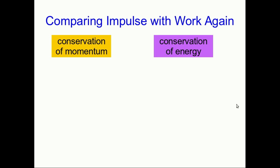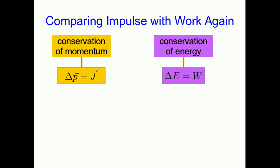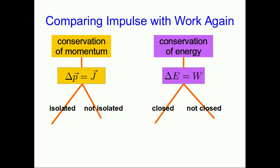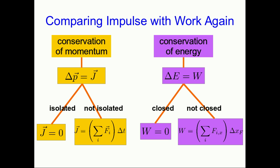Now that we know the structure of this theory, let's compare impulse with work. We start with two conservation laws — conservation of momentum and conservation of energy — writing that the change of momentum is the impulse, or the change in energy is the work done by external forces. The theories look very similar at this stage. It then splits into cases: either isolated or not isolated, or closed or not closed. In the isolated or closed cases, the impulse or work end up being zero. In the not-isolated or not-closed cases, we end up with equations for how to calculate impulse and work, which look extremely similar to each other. Overall, these theories are very similar in their structure.